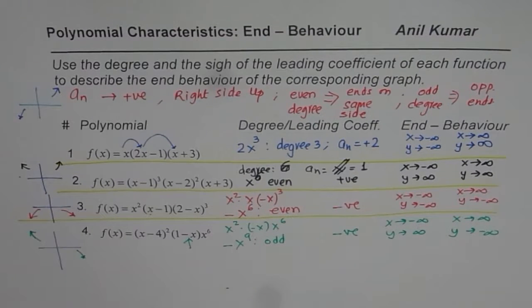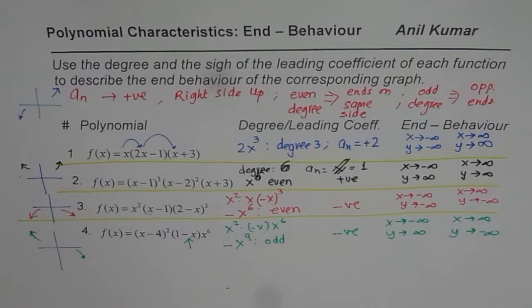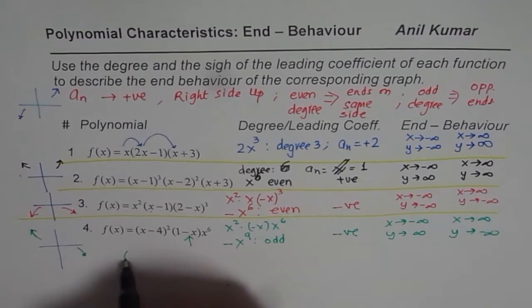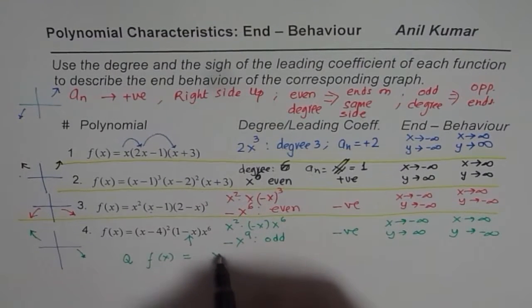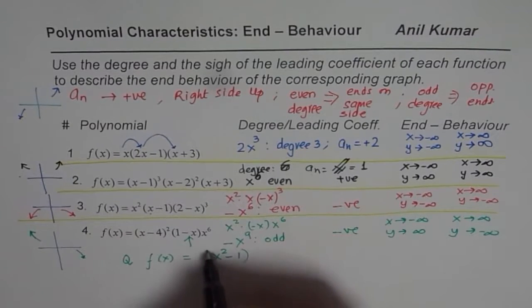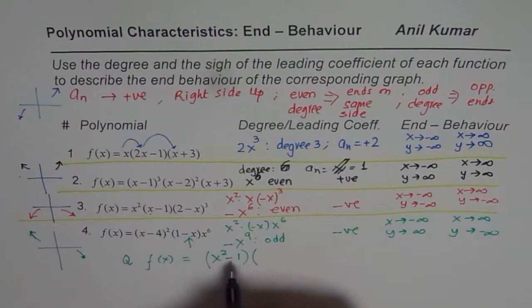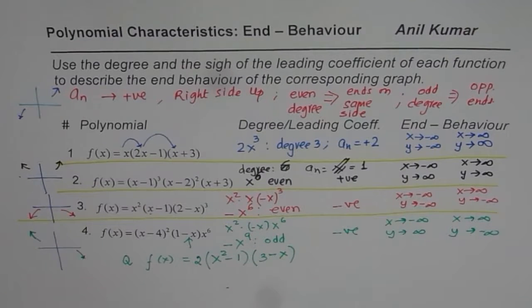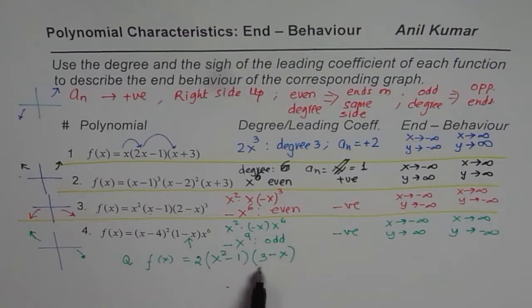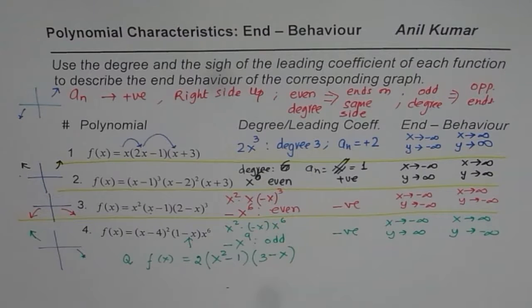I hope that summarizes clearly how to proceed when you have a polynomial function in factored form. Here is a test question: write down the characteristics for f(x) = 2 · (3 − x)^n — find the leading coefficient, the degree, and the end behavior. Try this question for good practice. Thank you and all the best.